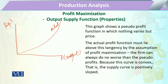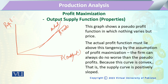Firms do not always work on the actual profit function; rather, they work by estimation, and there may be a certain pseudo profit line. The actual profit line lies above the tangency point and above the pseudo line. This shows that there is always a positive behaviour and a convex attitude, which confirms that the supply curve will be positively sloped.